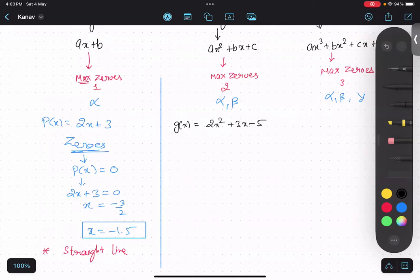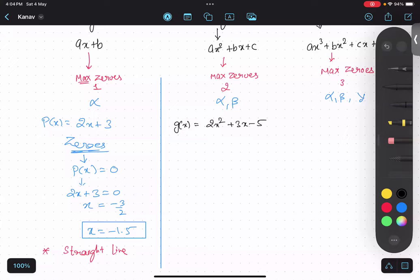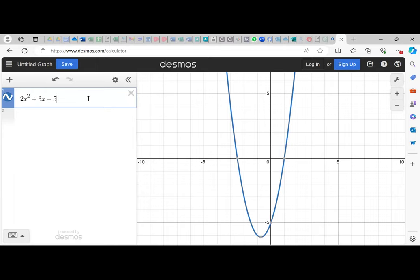Do you know how the graph will look like of this thing, 2x squared plus 3x minus 5? So this u-shaped curve is known as parabola. Okay. This is a parabola. And these are the two points where this parabola is becoming 0. Understood? So minus 2.5 and 1, these are the two zeros. Any doubt in this? No.